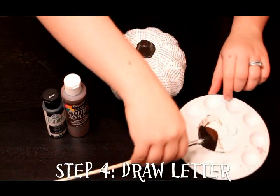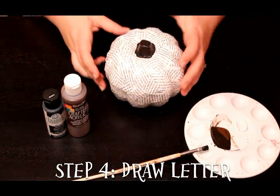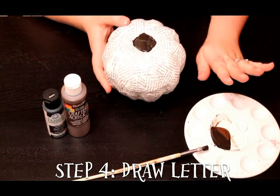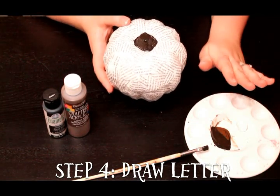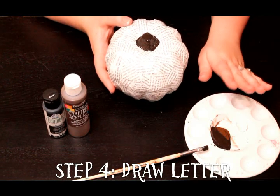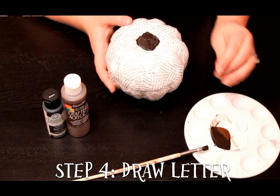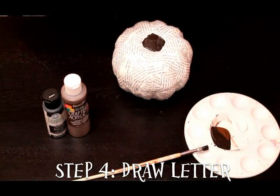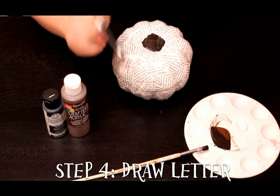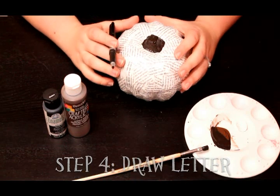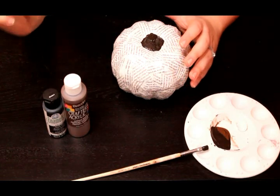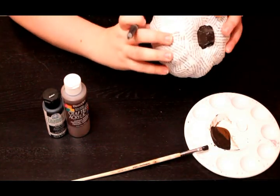For the letters on the front, you can do these several different ways. You can paint them, or if you have a Silhouette or a Cricut, some kind of cutting machine, you can cut a piece of vinyl that you could put on there. What I did personally is I'm using a permanent marker. I pulled up a font that I liked on my computer and had it as a guide to start tracing.